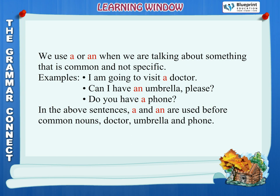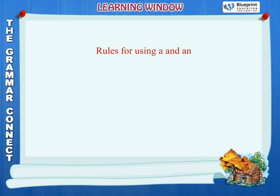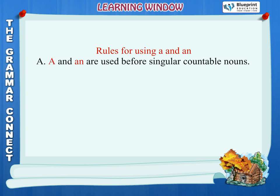Doctor, umbrella, and phone. Rules for using a and an. Rule A: A and an are used before singular countable nouns. Examples: a box, an ice cream, a girl.